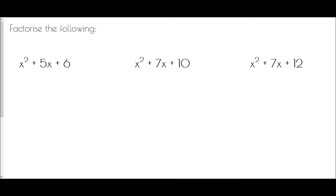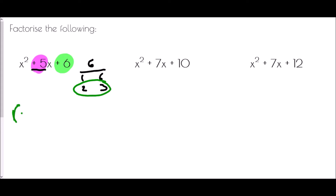Let's put that into action. Can we find a pair of numbers which multiply to make the end but add to make the middle? We should always start with the number at the end — we've got six. So I want to list the factors of six: one and six, two and three. Which pair gives us plus five when added? Clearly two and three. So in our brackets we'd have x plus two in one bracket and x plus three in the other.